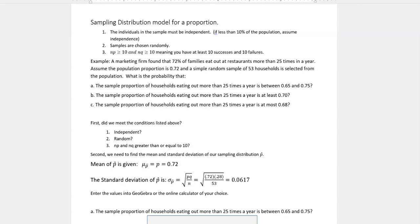Before we start, we should ask ourselves, did we meet the conditions listed above? Are they independent? Well, if you choose one household, that shouldn't affect another household, so yes, we can say they're independent. Secondly, is it random? It said it was a simple random sample, so we can assume that it is random.